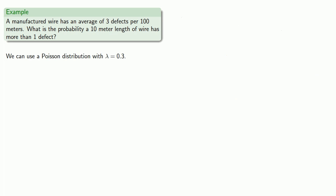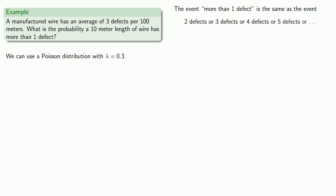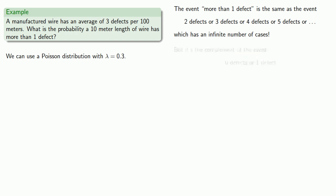Now we're interested in the event of more than one defect. This is the same as the event of 2 defects, or 3, or 4, or 5 — there's an infinite number of cases, and we don't want to spend the rest of infinity calculating. So instead, we note that it's the complement of the event of 0 defects or 1 defect.